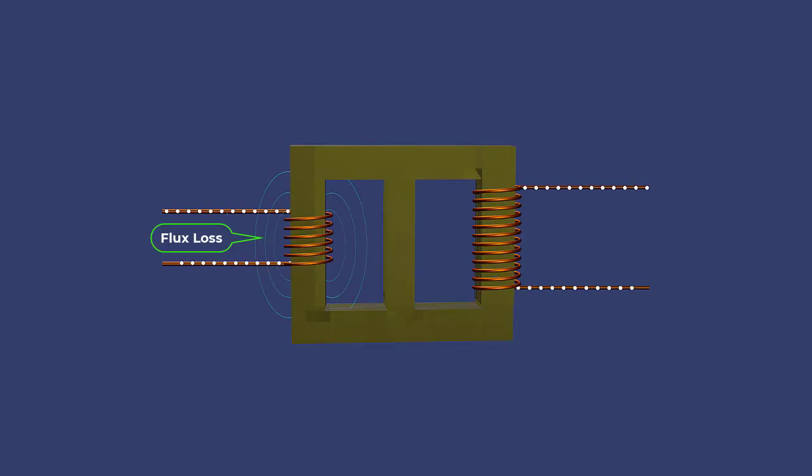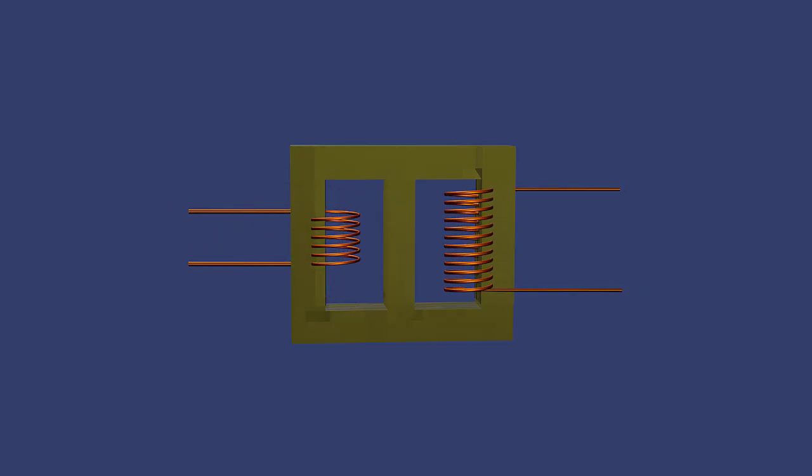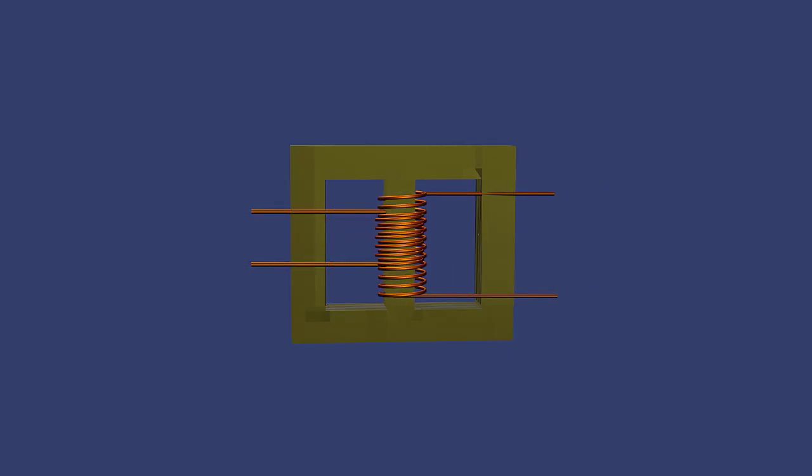Flux loss typically refers to leakage flux, which is the portion of the magnetic flux that does not link both the primary and secondary windings. Winding the primary and secondary coils one over the other helps to reduce leakage flux and improve coupling between the coils.